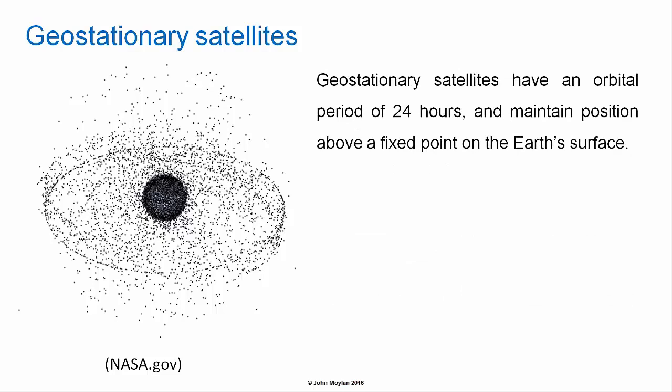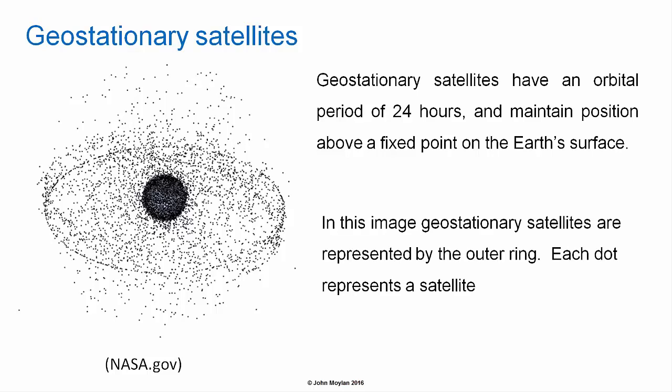Geostationary satellites have an orbital period of 24 hours, so they remain fixed above a particular point on the surface of the Earth. This NASA image shows geostationary satellites as the outer ring, and you can also see the high density of low Earth orbit satellites much closer in, which almost obscure the Earth in this image.